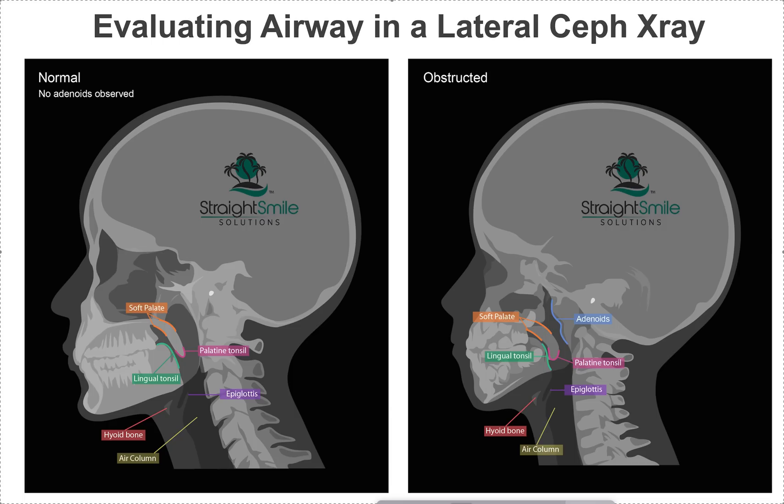On the left, we have an adult with no obvious adenoids present. You can see where the adenoids are on the right side. Usually you'll see this kind of round, bulbous lump right here. Adenoids you cannot see clinically, but you can see them in an x-ray.